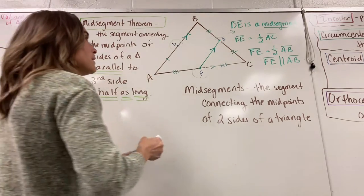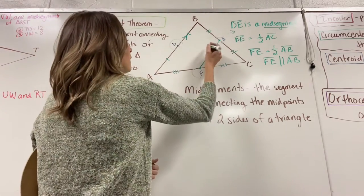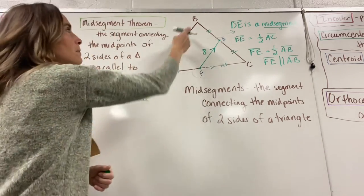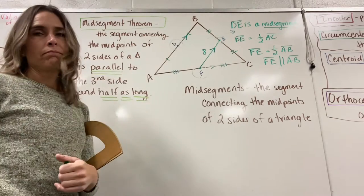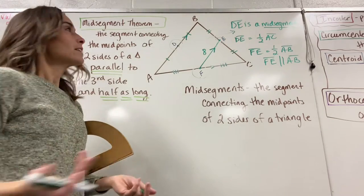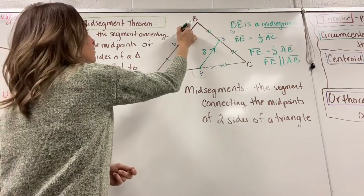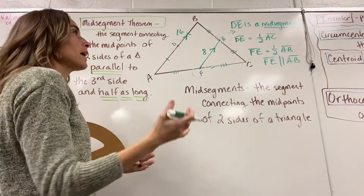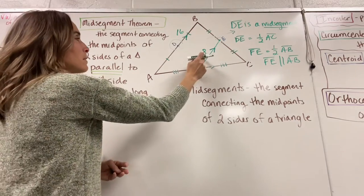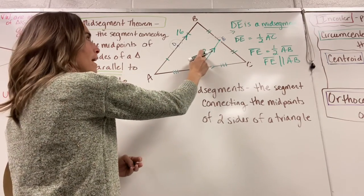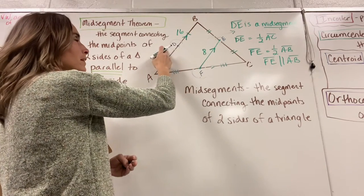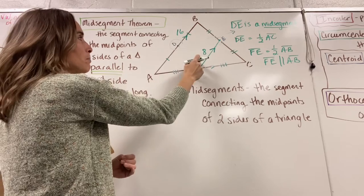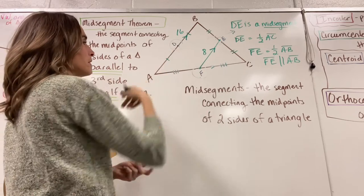So that's your mid-segment theorem — the segment connecting the midpoints of two sides of a triangle is parallel to the third side and half as long as the third side. If this mid-segment is 8, what's AB going to be? Sixteen. The mid-segment is half the length of the third side and parallel to the third side.